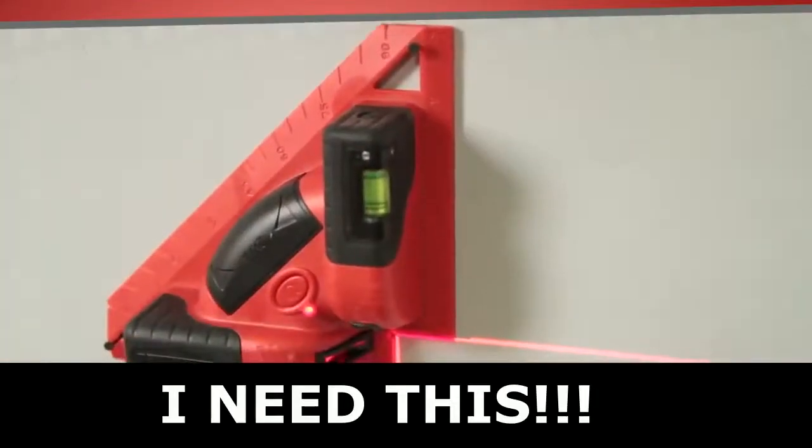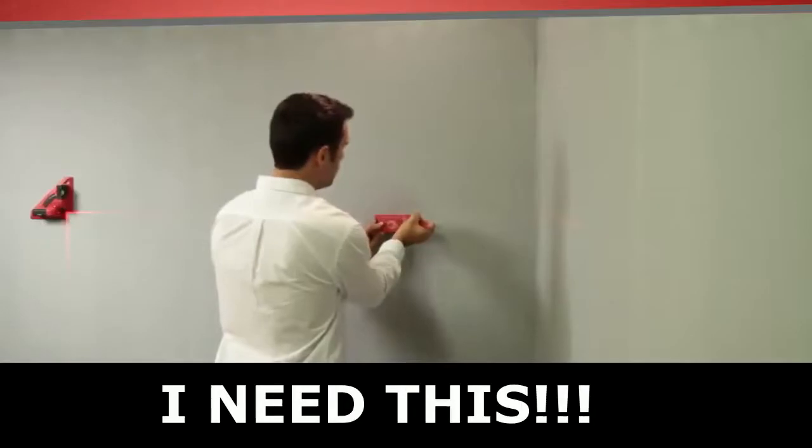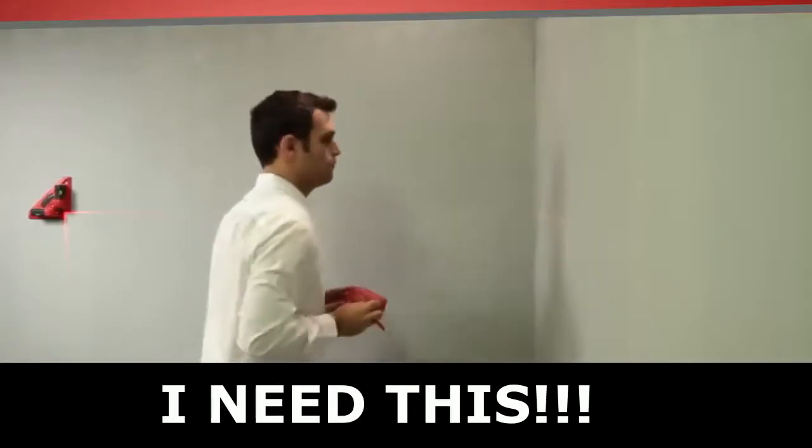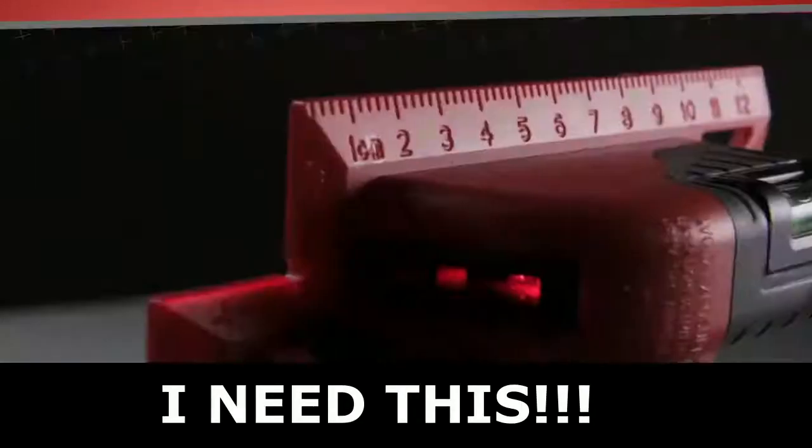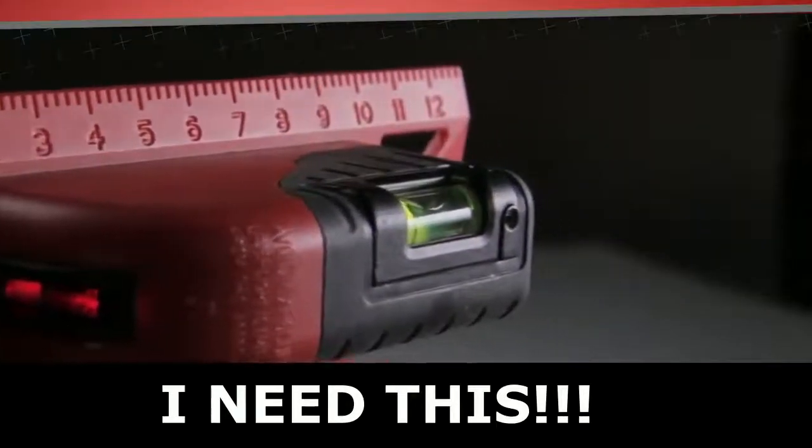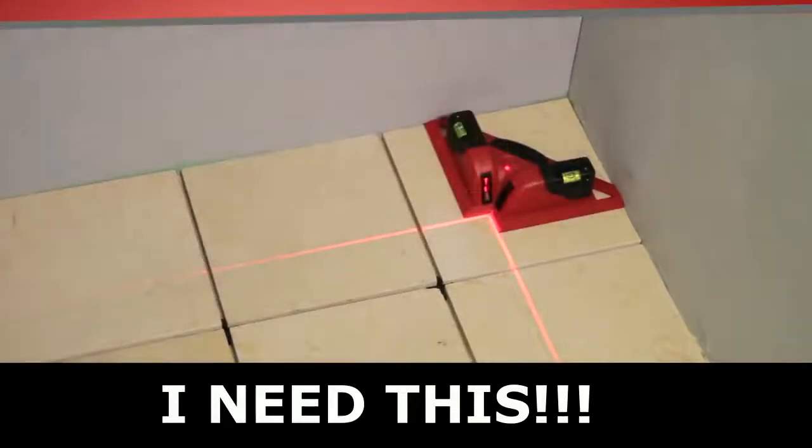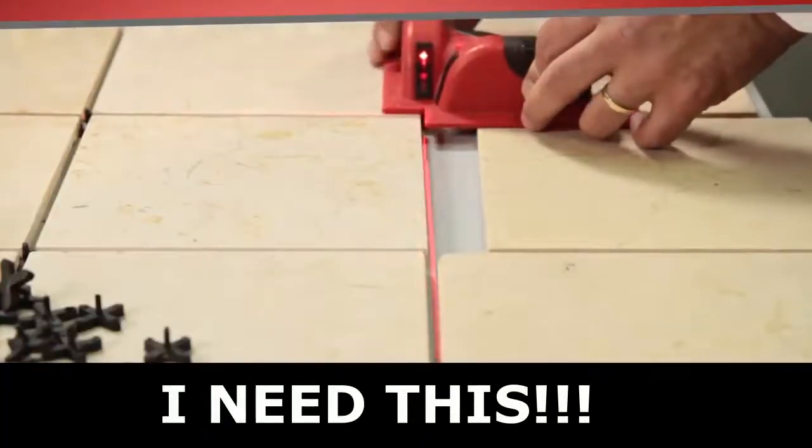The 891 has two bubble vials built in to ensure accurate angles and level and plumb lines when mounted vertically. Degree and measurement markers are cast into the base, and the flattened endpoints make it easy to set the 891 squarely into any corner.